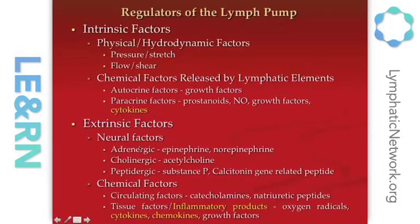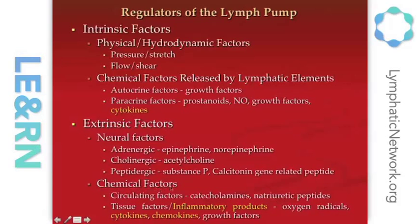There are also extrinsic factors, including the nervous system — even though lymphatics work on their own without innervation, the body can modulate that basic function via adrenergic, cholinergic, and peptidergic agents, the last of which are particularly important for inflammatory reactions. Chemical factors that circulate in blood or tissue can also modulate lymphatic function. Critically, many inflammatory products — such as oxygen radicals, cytokines, and chemokines — found in tissue fluid and lymph that bathe both sides of the lymphatic can alter its function dramatically.